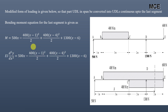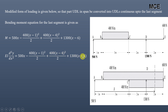Now we write M in terms of y and x: EI d²y/dx² = 500x − 400(x−1)²/2 + 400(x−4)²/2 + 1300(x−6). Here (x−1), (x−4), and (x−6) are each treated as single terms for the purpose of integration.